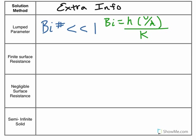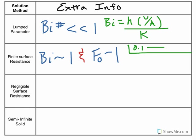For finite surface resistance, your Biot number needs to be about one. And, additionally, your Fourier number needs to be about one. And what about one means is like one order of magnitude from one. So, anywhere from 0.1 to 10.